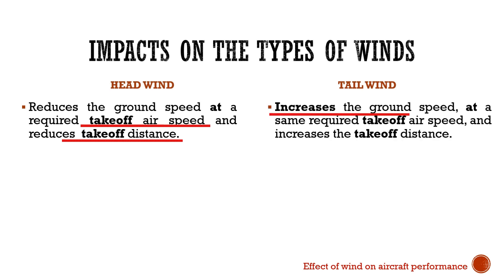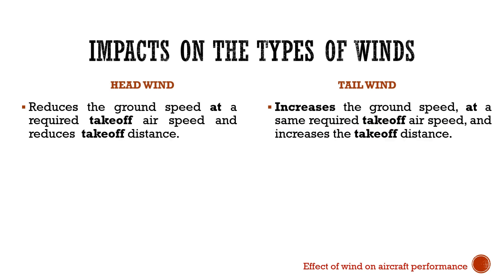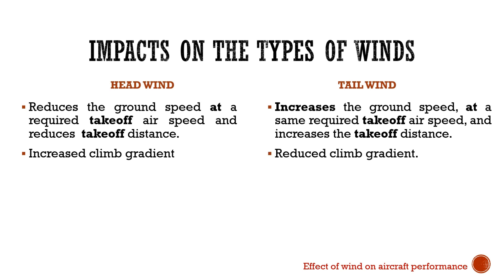On the other hand, a tailwind increases the ground speed at the same required takeoff airspeed and increases the takeoff distance. A headwind gives an increased climb gradient, whereas a tailwind affects in the opposite direction and gives a reduction in the climb gradient.